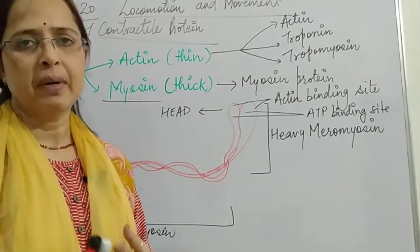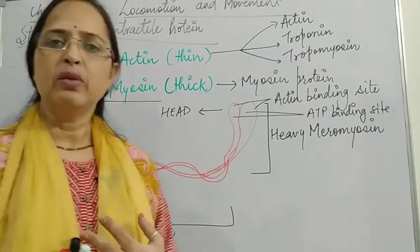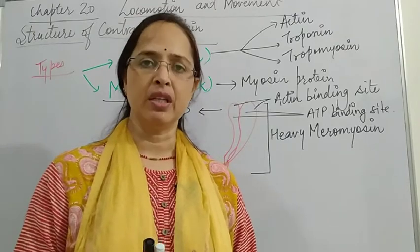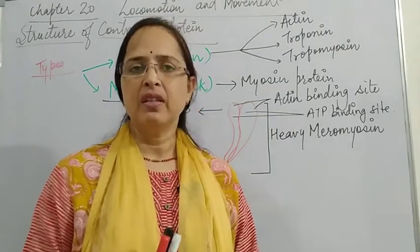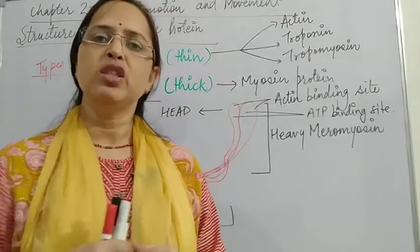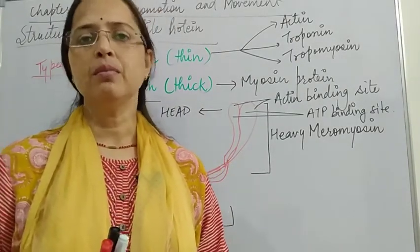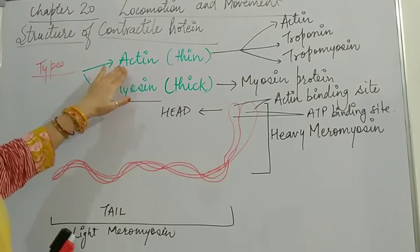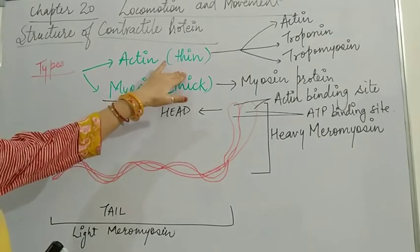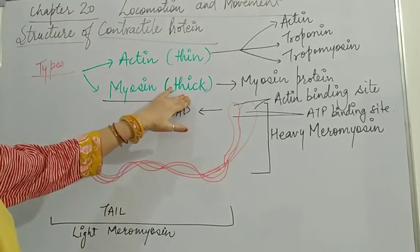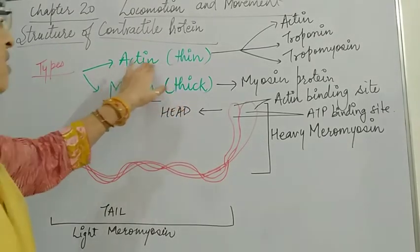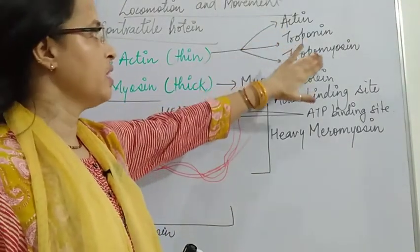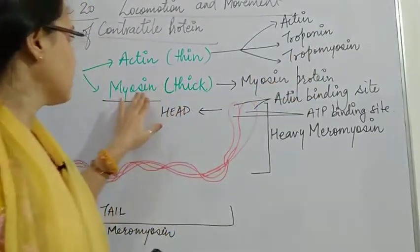Now you know that there are two types of proteins present in the muscle: actin protein and myosin protein. The contraction of the muscle occurs because of the activity of these two proteins. Actin protein is thin and myosin protein is thick. The actin filament consists of three parts: actin, troponin, and tropomyosin.